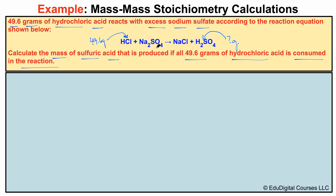We have 49.6 grams of hydrochloric acid reacting with an unlimited quantity, or an excess, of sodium sulfate. We're asked to calculate how much sulfuric acid in grams can be produced. The very first thing we need to do is rewrite this chemical equation and balance it.